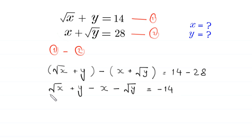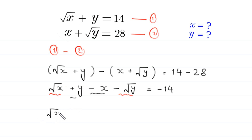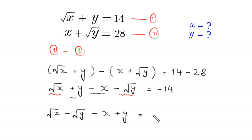Now we combine the two terms root x and negative root y, and we combine the terms negative x and plus y. This becomes square root of x minus square root of y minus x plus y equals negative 14.